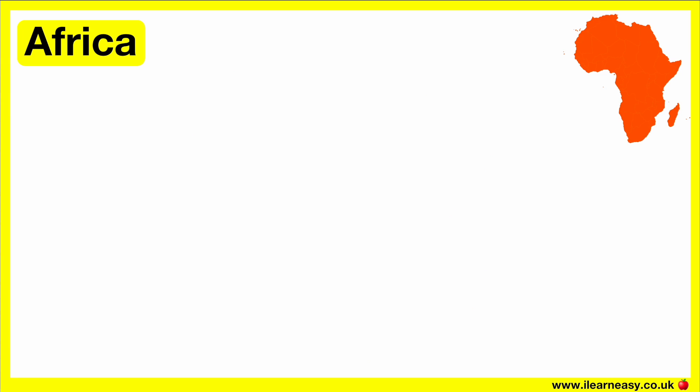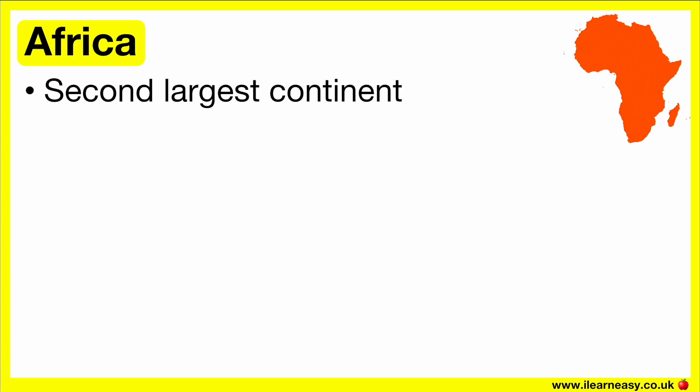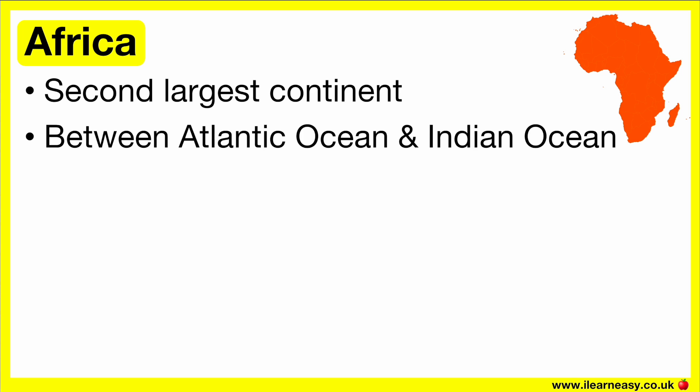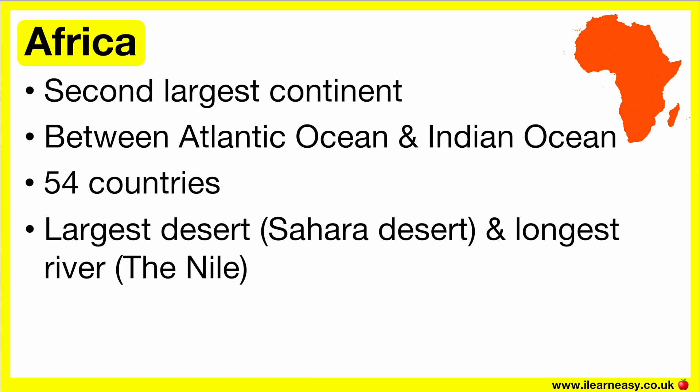Africa is the second largest continent. This continent lies between the Atlantic Ocean and the Indian Ocean. There are 54 countries in Africa. This continent has many natural wonders, such as the world's largest desert, the Sahara Desert, and the world's longest river, the Nile. The Sahara Desert is located in the north of Africa, and the river is located in the east of Africa.